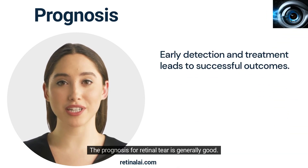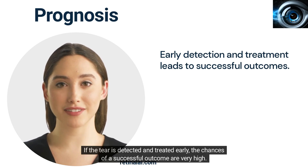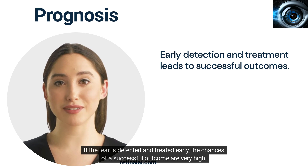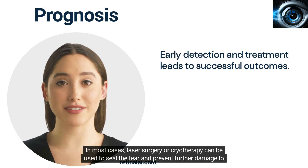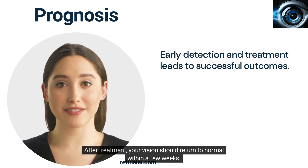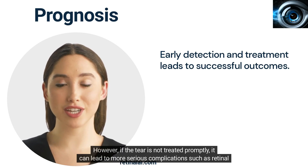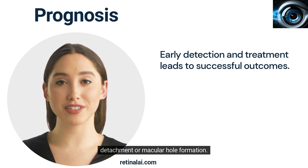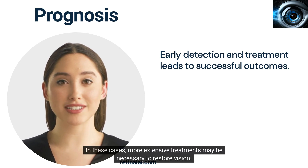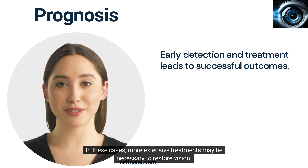The prognosis for retinal tear is generally good. If the tear is detected and treated early, the chances of a successful outcome are very high. In most cases, laser surgery or cryotherapy can be used to seal the tear and prevent further damage to the retina. After treatment, your vision should return to normal within a few weeks. However, if the tear is not treated promptly, it can lead to more serious complications such as retinal detachment or macular hole formation. In these cases, more extensive treatments may be necessary to restore vision.